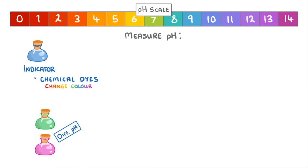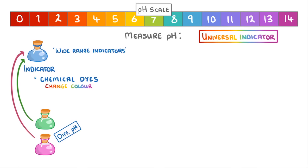Some indicators contain a mixture of these different dyes though, so their colour will slowly change across a wide range of pHs. So we often refer to them as wide range indicators. The most common example is universal indicator, which gives the colours we've shown on our pH scale here, ranging from deep red at a very low and acidic pH, to yellow, green and then bluey-purple, as we increase the pH and it becomes more alkaline.